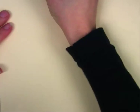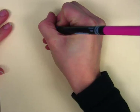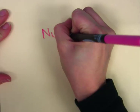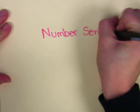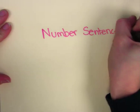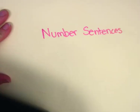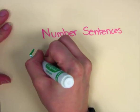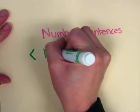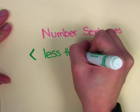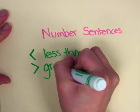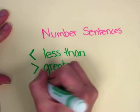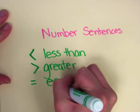Today we're going to talk about solving number sentences. In order to do that, you have to know three symbols. The first symbol that you have to know is the less than symbol. The next symbol you have to be aware of is the greater than symbol. And then finally you have to know the equal symbol.